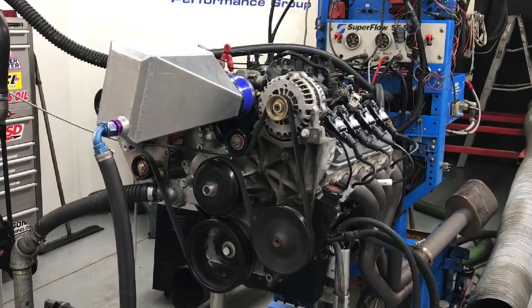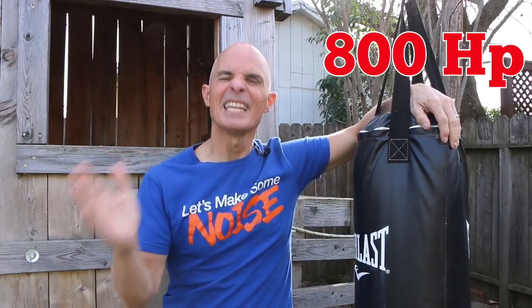Let's say you got a turbo or supercharged combination making 700, 800, 900 horsepower. How do you know if that's good power, bad power, or somewhere in between?